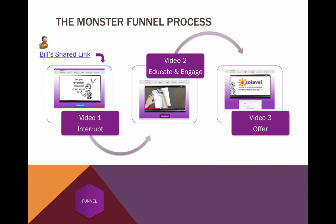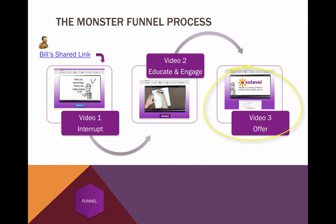The Monster Viral Funnel process uses a three-step video sales process. For example, Bill might share a link out to a video on the Internet. We call that first video of the funnel the interrupt video because it's designed to interrupt what you're doing and get your attention — think of it as an attention-getter. The second video is to engage and educate somebody on what the opportunity is, how it works, and why they should get involved. The third video talks about why they need to take action.